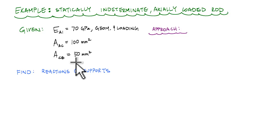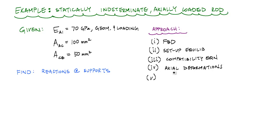And what we want to do is find the reactions at the supports. Our general approach will be to first and foremost draw that FBD, set up some equilibrium equations, and verify it's indeterminate. In this case, it will be indeterminate to the first degree. And we will come up with a compatibility relationship to help us solve this. And then once we have our compatibility equation, we'll be calculating some axial deformations and solving for our unknown reactions.